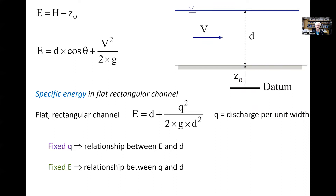For a flat rectangular channel, we can combine the definition of the specific energy with the continuity equation, and we obtain: specific energy E equals d plus q²/(2g·d²), where small q is the unit discharge or discharge per unit width. We are going to look at the relationship between specific energy, water depth, and unit discharge — first for a fixed unit discharge focusing on the E-d relationship, and next for a fixed specific energy looking at the q-d relationship.